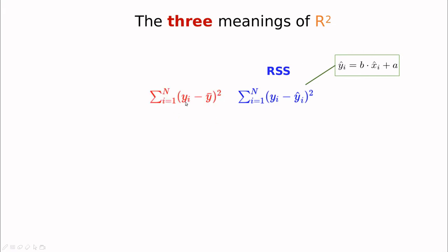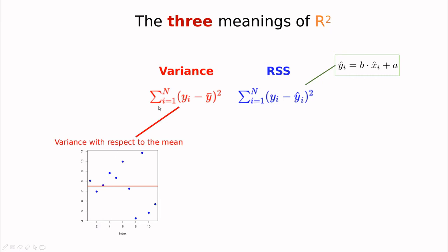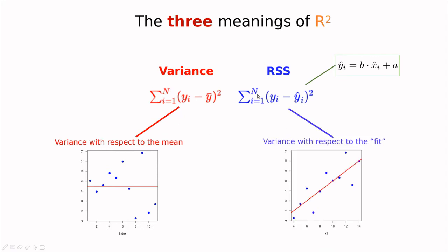Let's compare this to another parameter. This is not the prediction — this is the mean value of y. This is called traditionally in statistics the variance of y. So essentially, when we are calculating this, we're comparing the observations with the mean value. This is the variance with respect to the mean of the parameter, without any consideration about the input. Here we're comparing the observation y with the predicted ŷ, which takes into account the effect of the predictor. So this is the variance with respect to the mean, and this is the variance with respect to the fit.